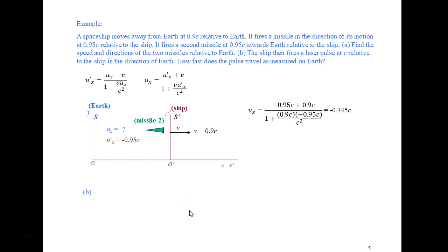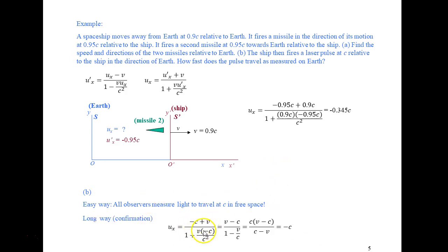Part B: the ship fires a laser pulse at velocity c relative to the ship in the direction of the Earth. How fast does the pulse travel as measured on Earth? Easy answer: all observers measure light to travel at c — no math needed. But if you use the transformation equations with u prime sub x = -c, regardless of what v is, the algebra shows that the v terms cancel and u sub x is also -c. You're ready to try your homework problem.